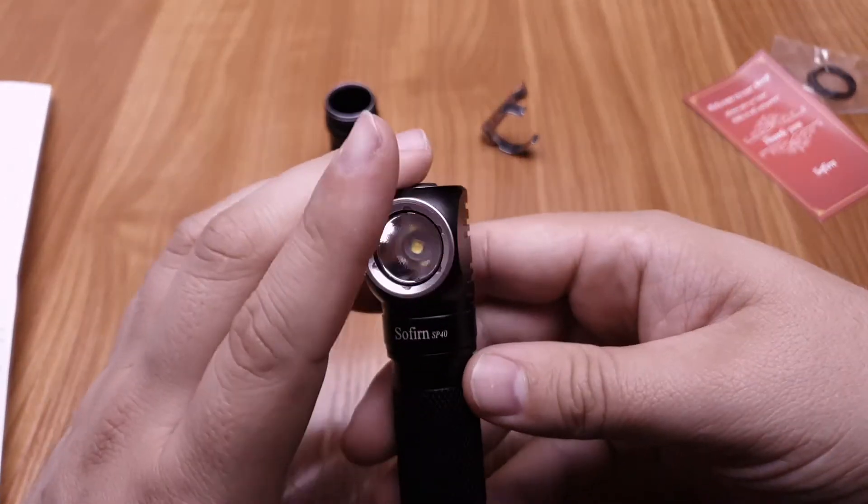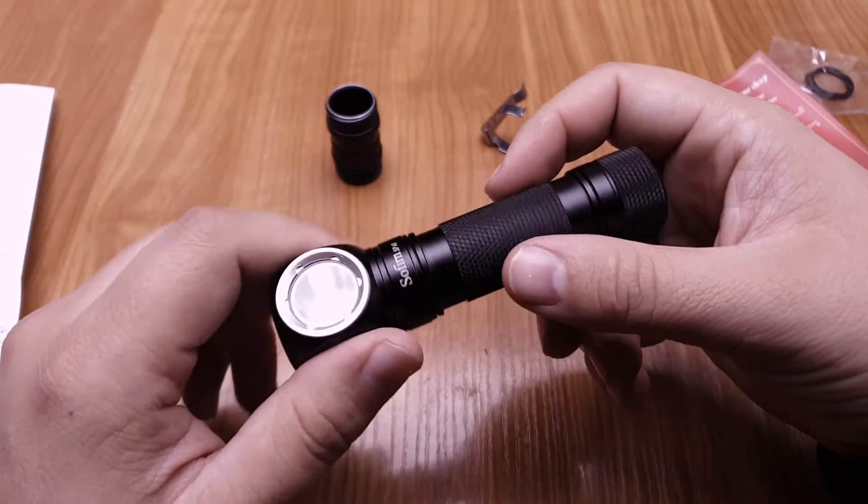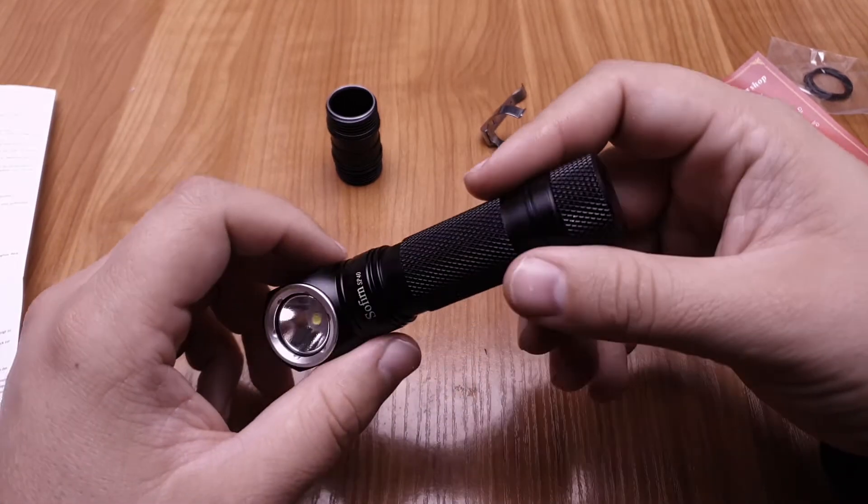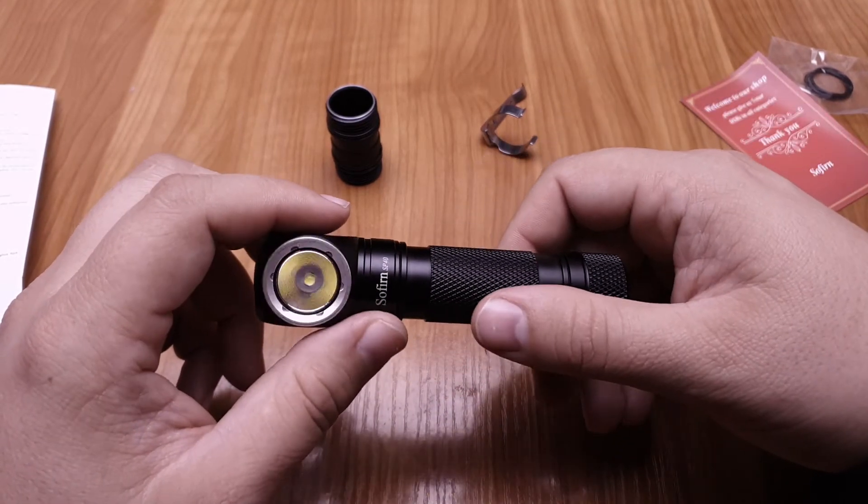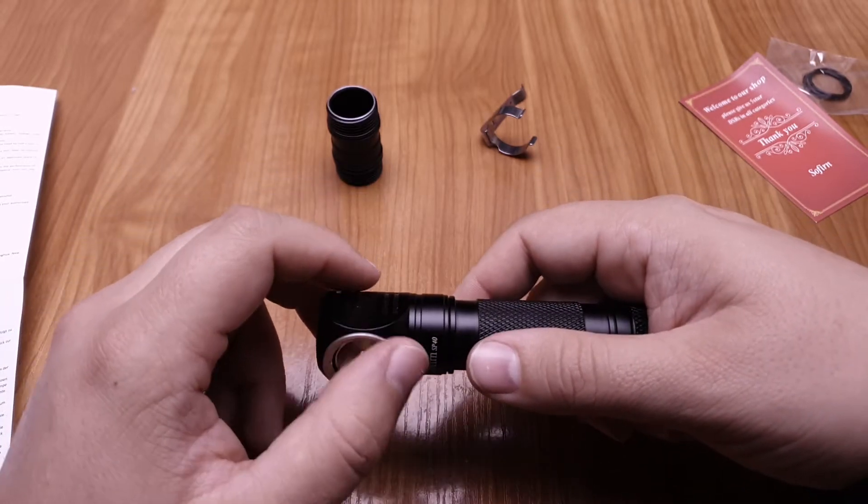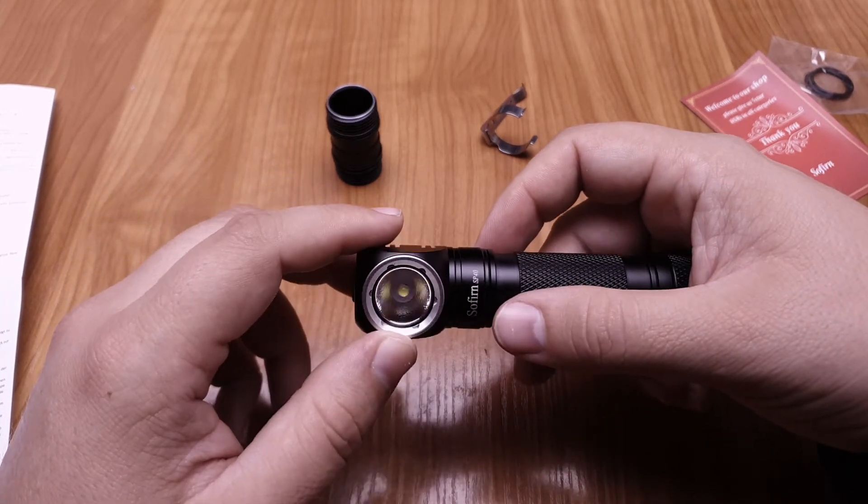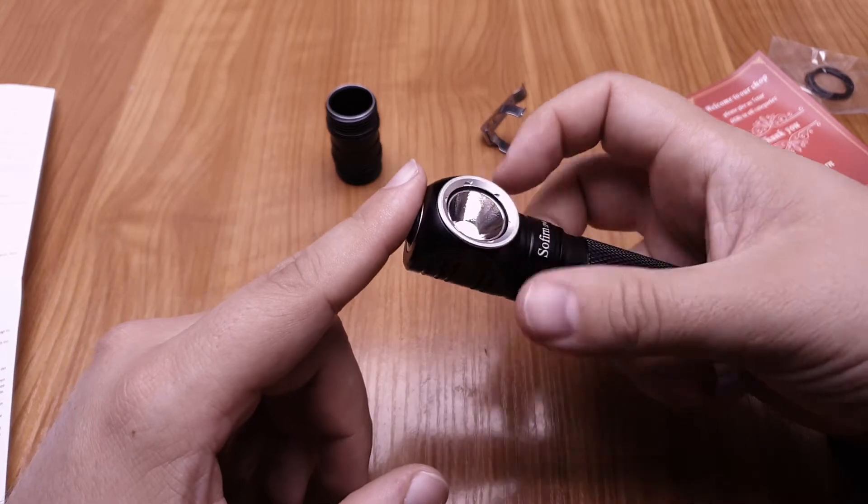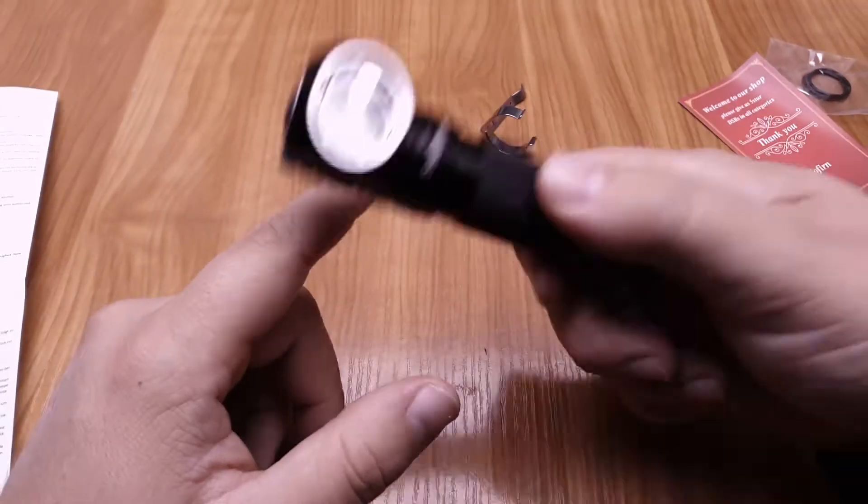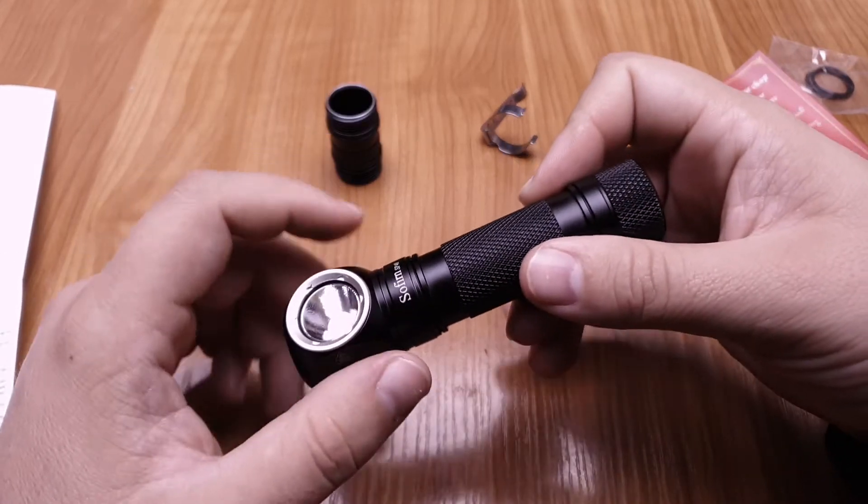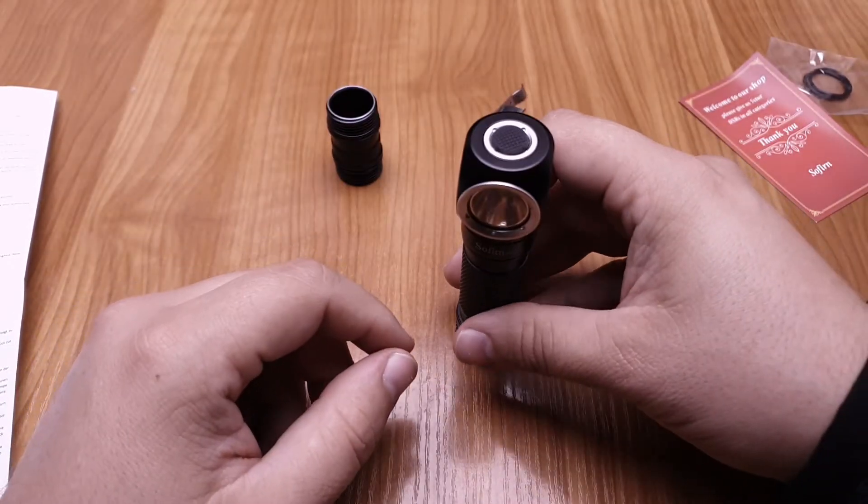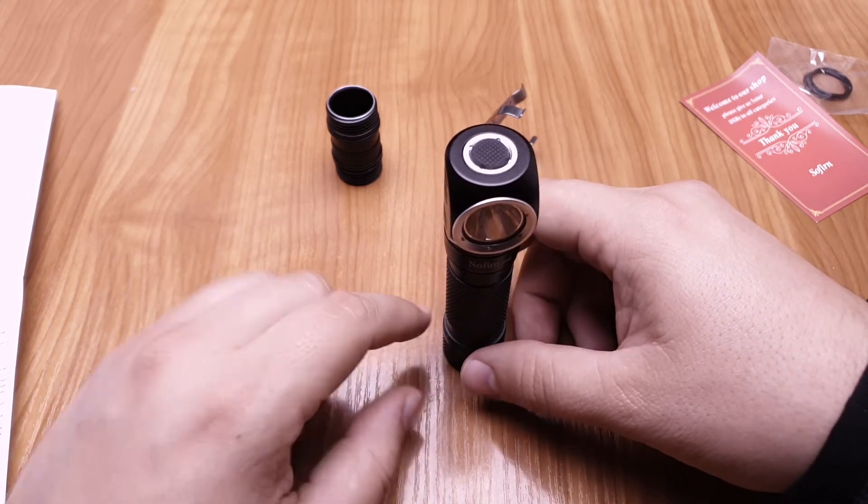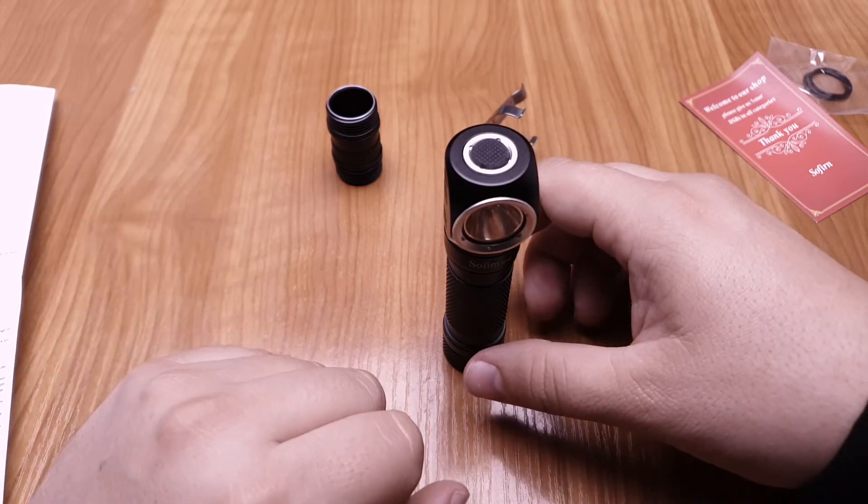And let's see some comparison. Because nowadays a few flashlights, not flashlights, headlamps came out in this $20 range. And also Eagle Eye X1R and Convoy H1 came out. But I cannot find every, everything, every feature I search in a headlamp in one of these. So everyone is missing something small to be perfect.